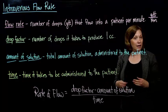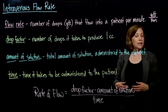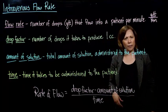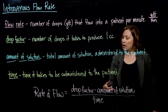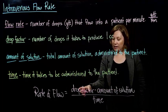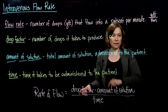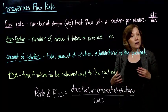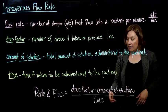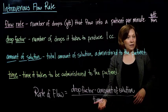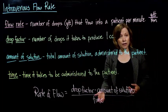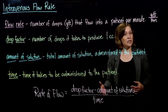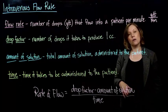The time is the amount of time it takes to administer all of that solution to the patient. In your book, they give you this formula. To get the rate of flow, we take the drop factor — how many drops in one cc — times the amount of solution. That gives us the total number of drops we need. Then we divide by the amount of time we're going to be administering the solution, and that gives us drops per minute, just like what we want.